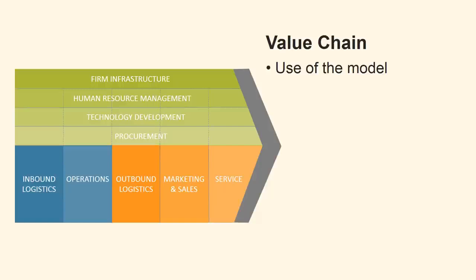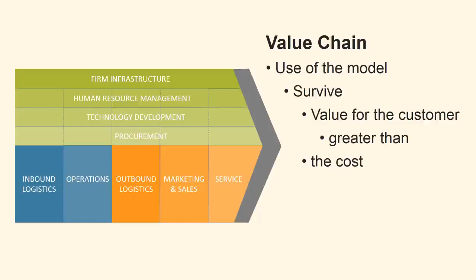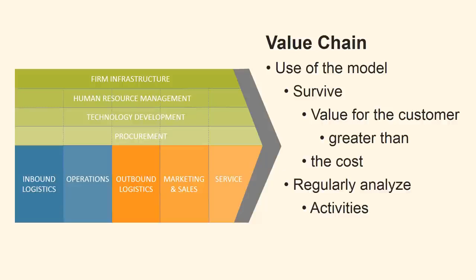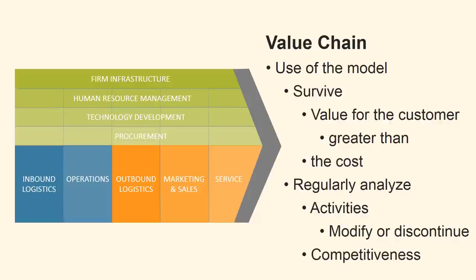Now we shall consider how you can use the model in practice. If the manufacturer of a product is going to make a profit and survive, the total value of the product for the customer has to be greater than the cost of creating the product. Therefore, you should regularly review the nine activities and analyse if the individual activities carried out provide more value to the customer than the costs they accumulate. If you find areas where you cannot answer yes, then you should modify or discontinue these activities, thereby continuously improving your company's competitiveness.